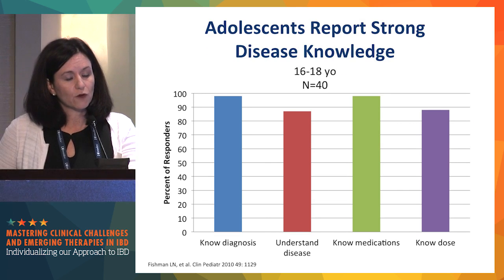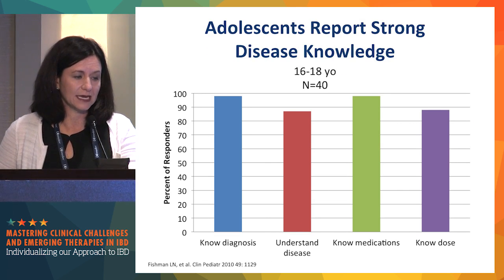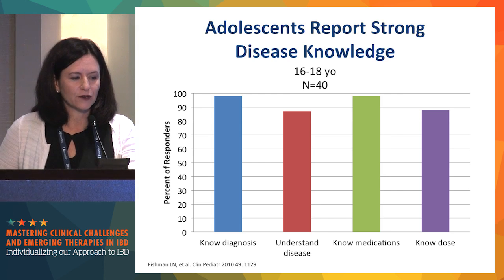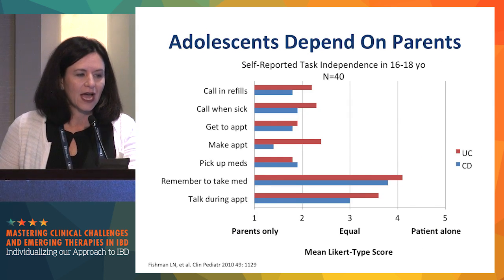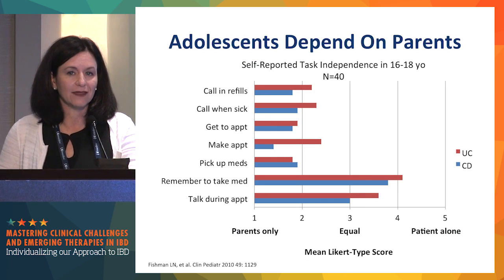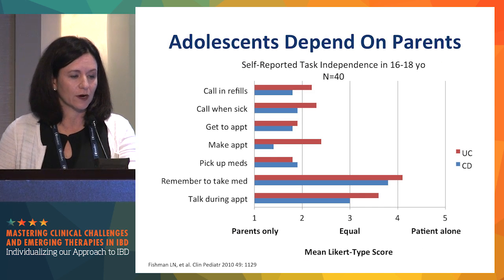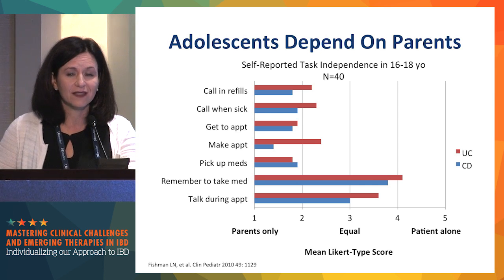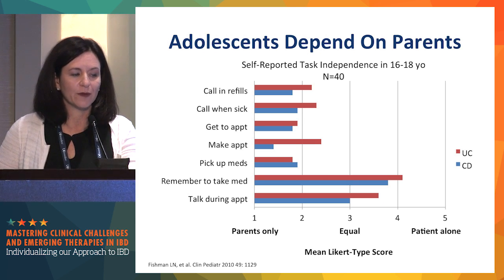Lori Fishman in Boston looked at 40 adolescent patients aged 16 to 18 and assessed their IBD knowledge. She found that almost 100 percent knew their diagnosis and about 80 to 90 percent understood their disease. Almost 100 percent knew their medications and many knew their doses. However, when asked how ready they were to be independent in self-management tasks — calling in refills, remembering to take meds, getting to appointments, talking during visits — none of these teens were independent in any of those tasks.